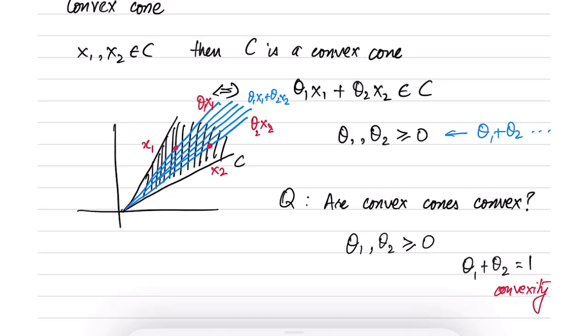Now, of course, convex cone is not affine. Convex cone is not affine because for affine, we require θ1, θ2 to be arbitrary and sum up to 1. But negative θs are not being allowed by convex cone.